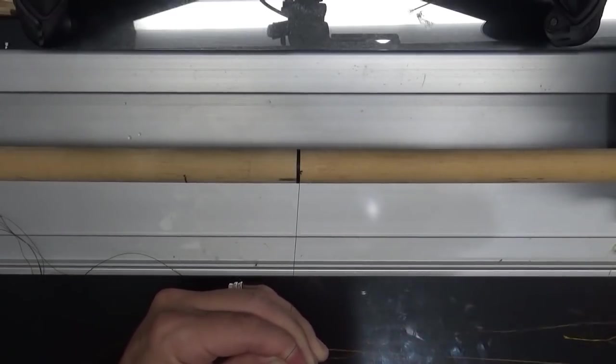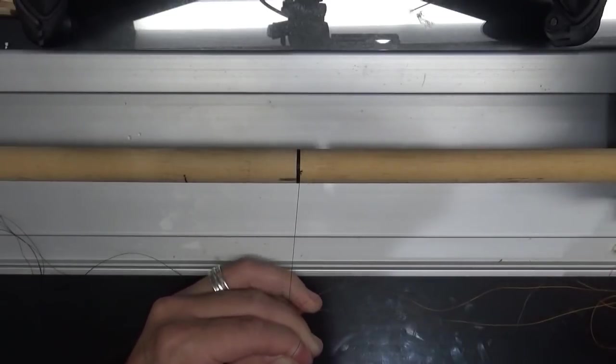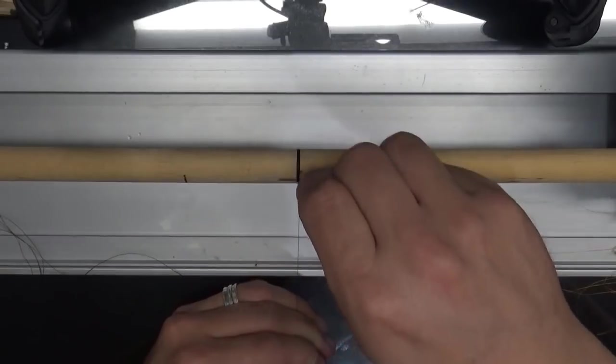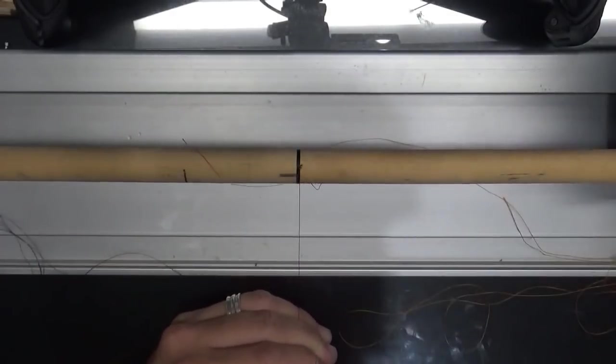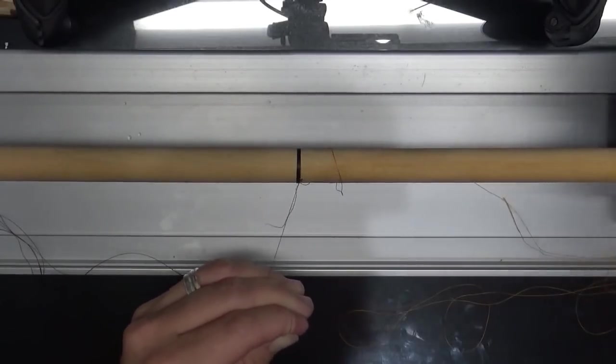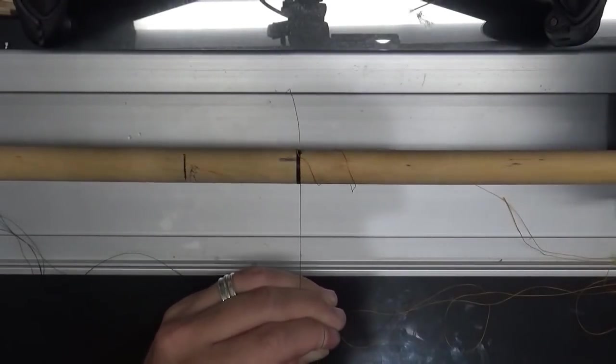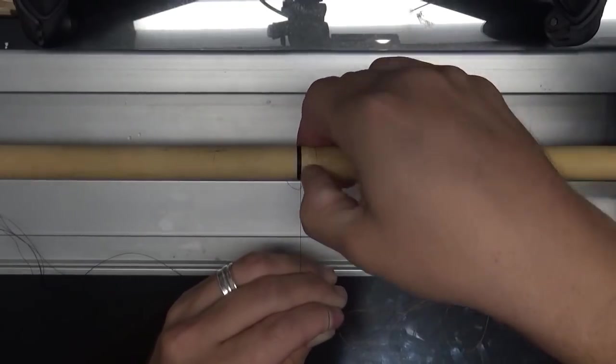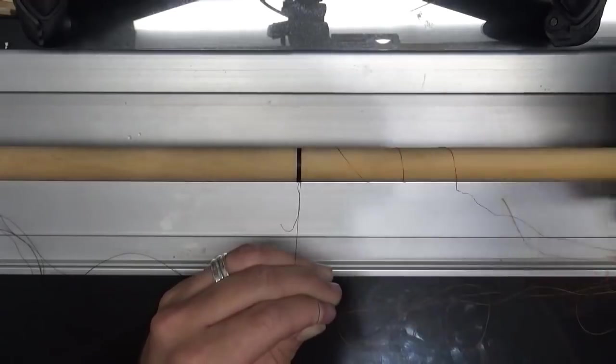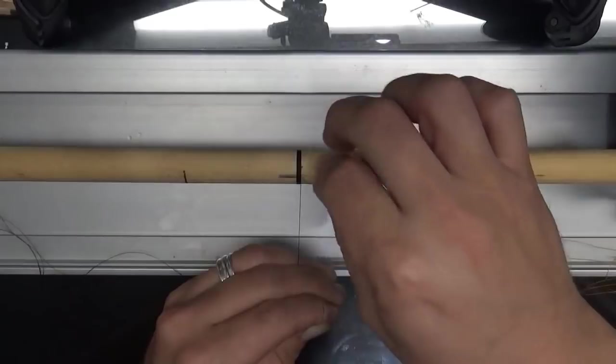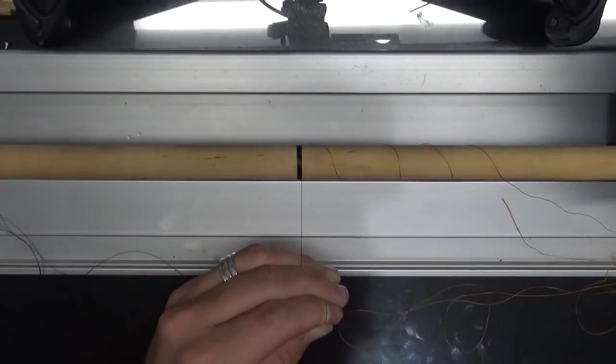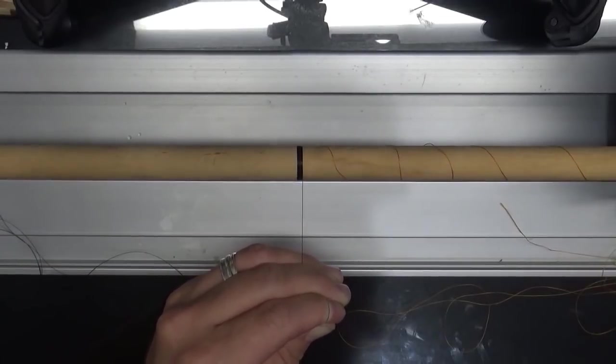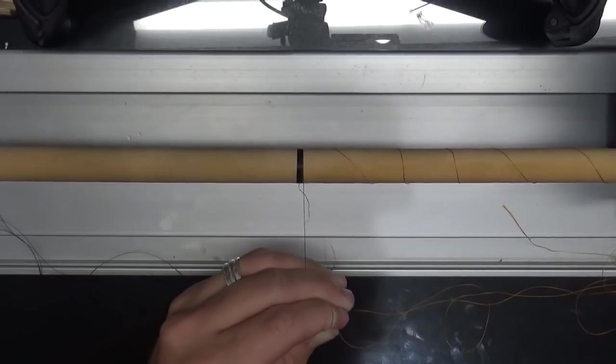Now we're just going to introduce the orange thread here. Alright, now what we're going to do is do about seven passes here. Seven or eight passes. So we've got one, two, three, four, five, six, and seven. We're going to make sure things are snugged.